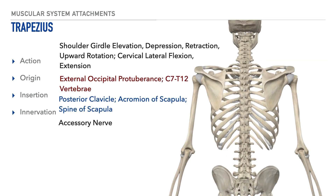Moving along, we now have the trapezius, and there is a large variety of actions produced by this muscle, which includes shoulder girdle elevation, depression, retraction, and upward rotation. In addition, it performs cervical lateral flexion and cervical extension. The muscle originates from the external occipital protuberance and from the C7 spinous process to the T12 spinous process.